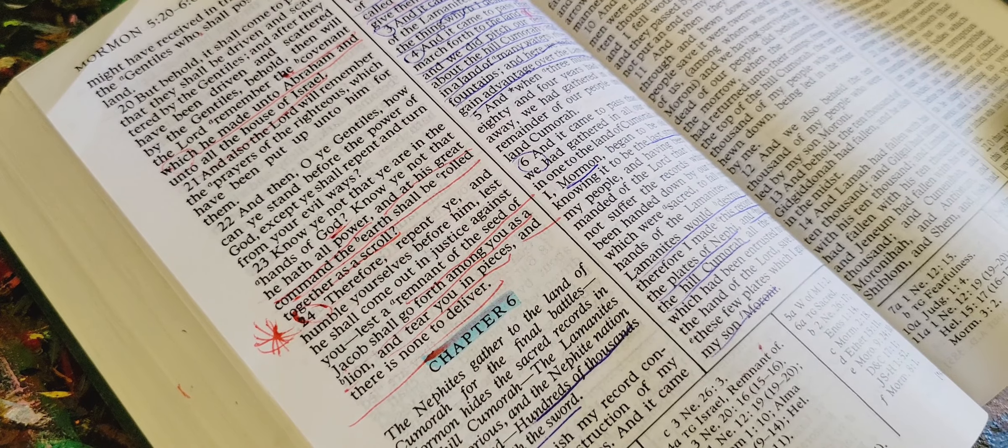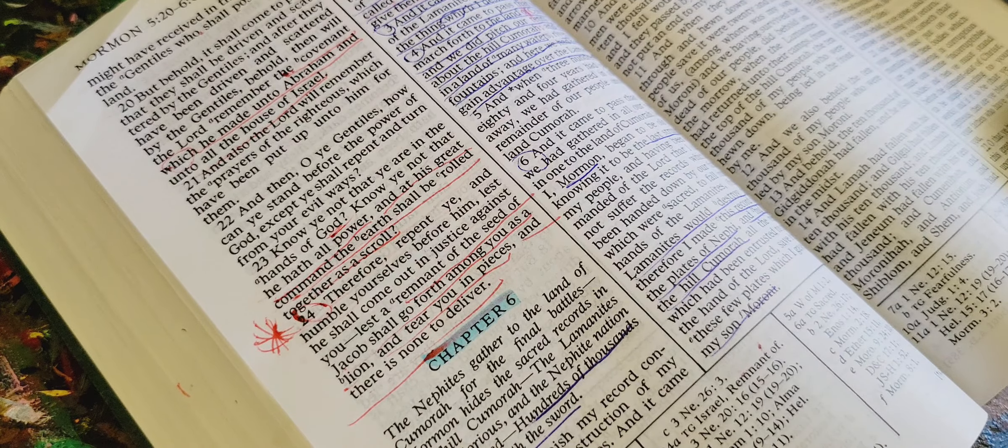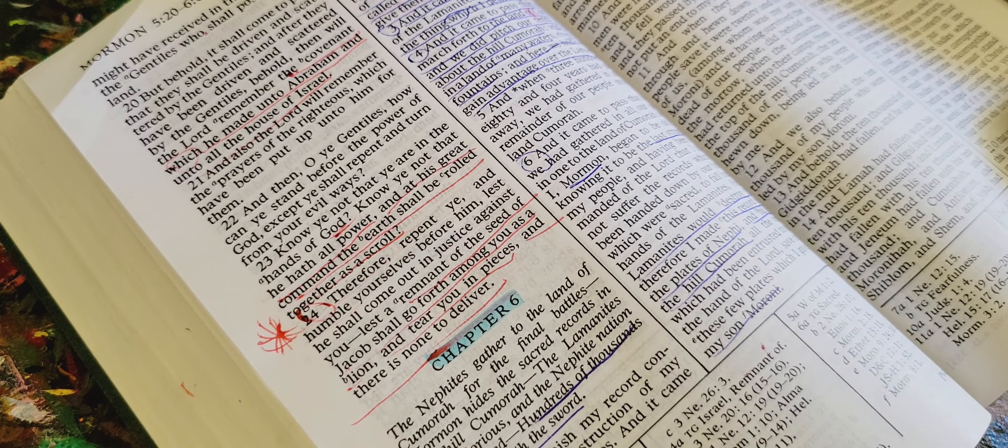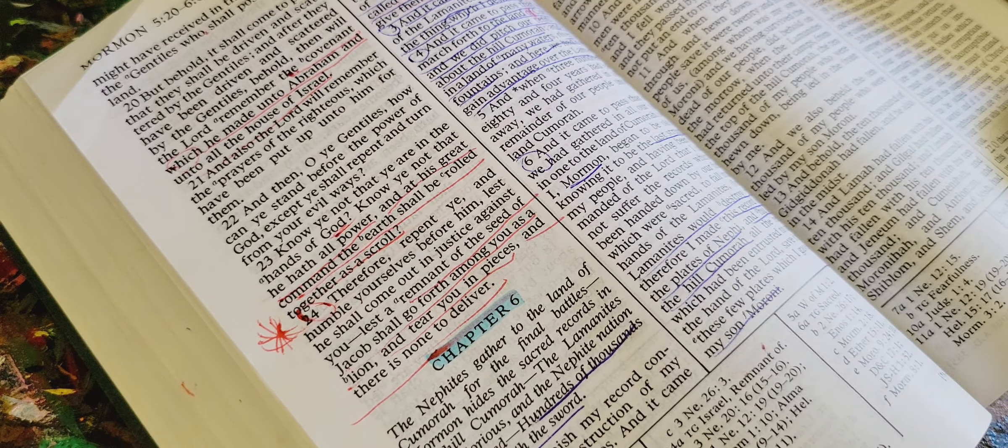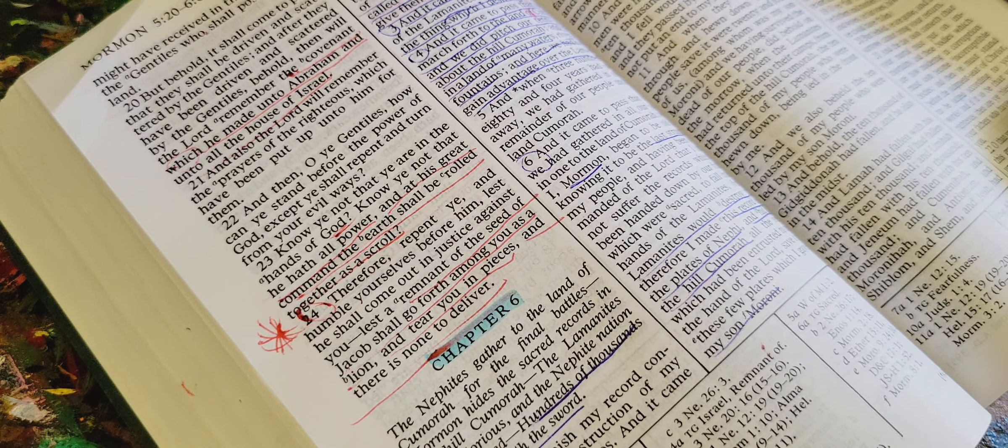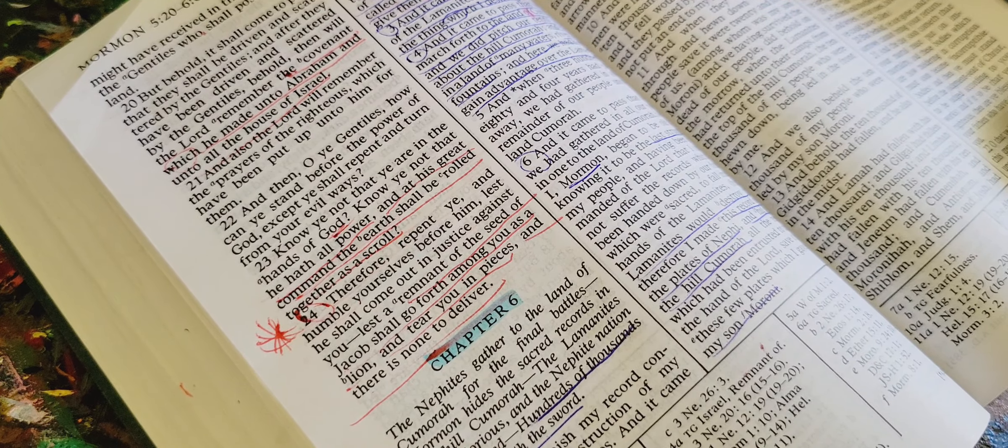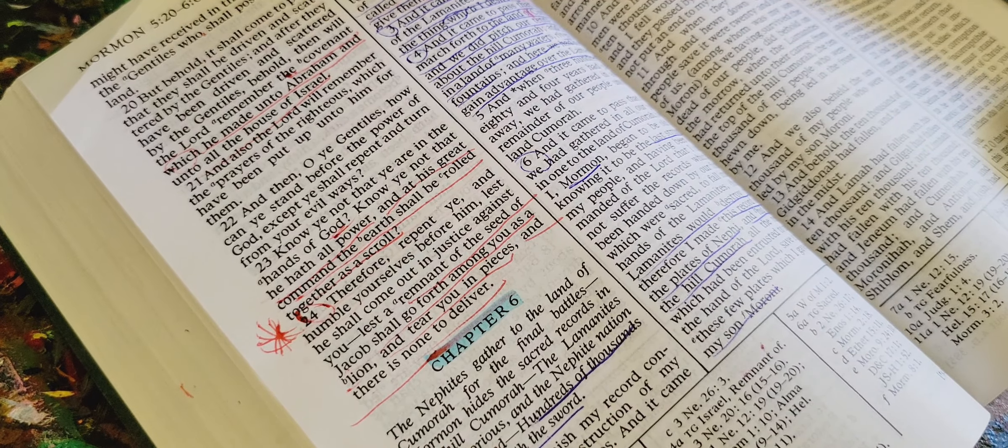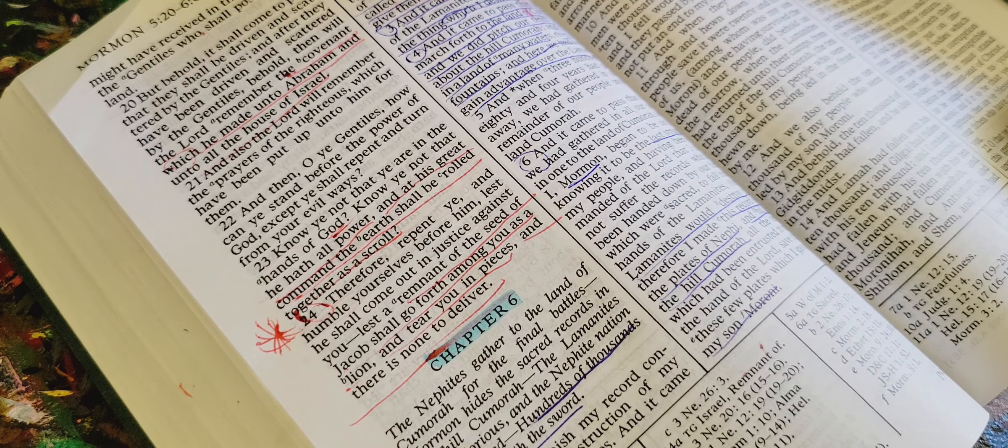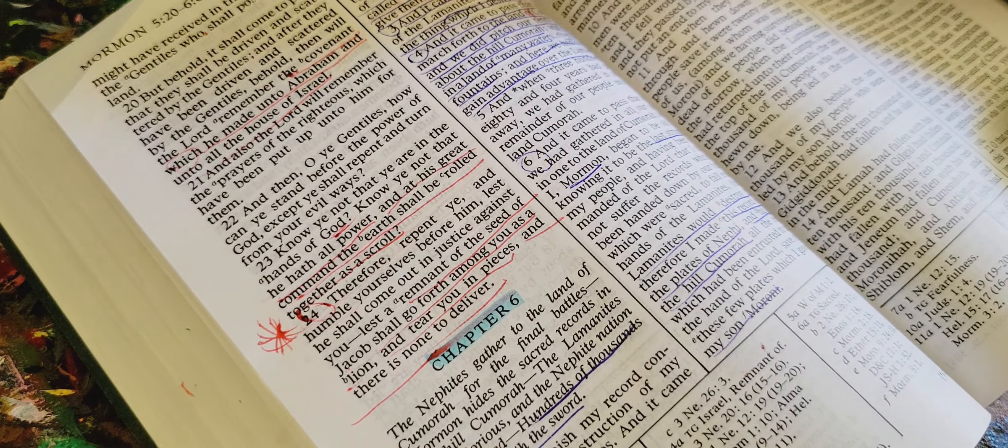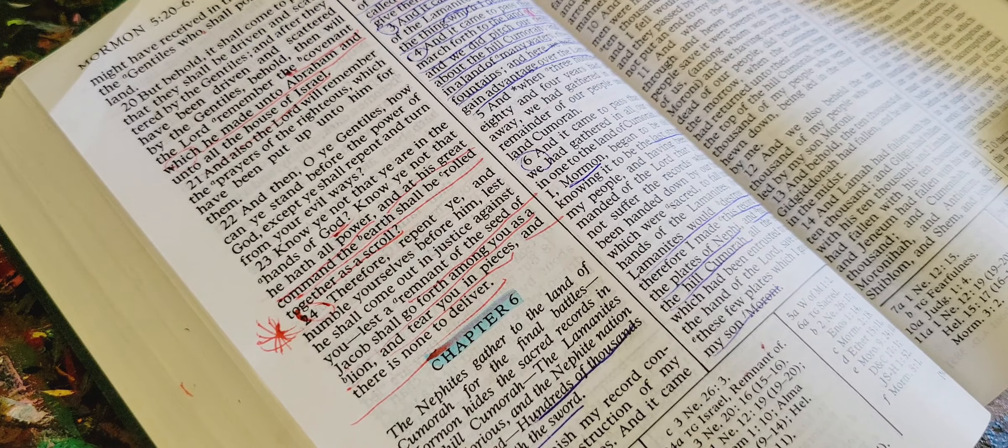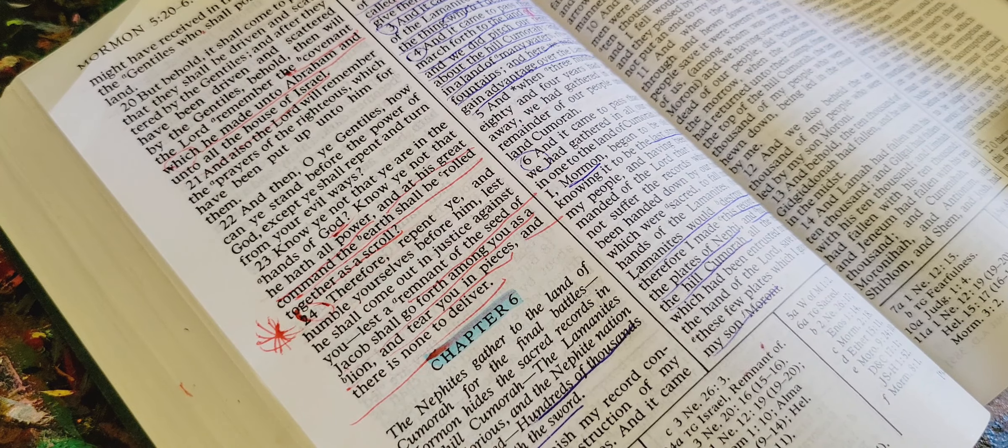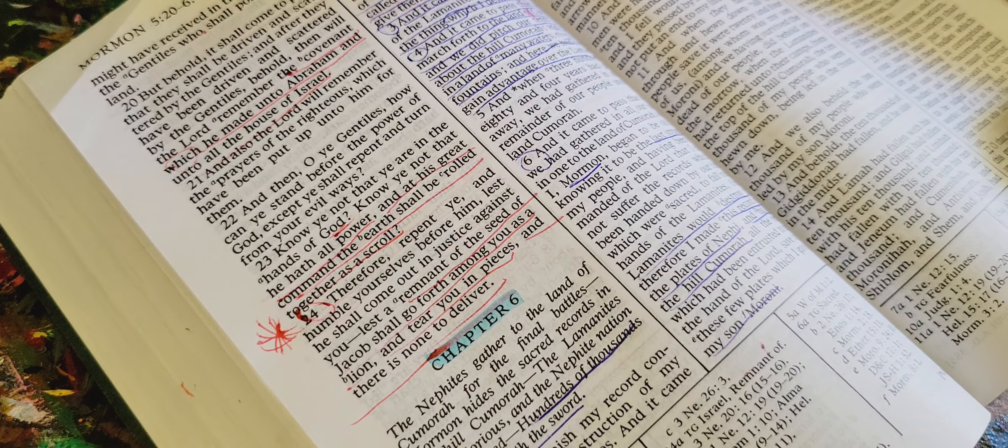And it came to pass that my people with their wives and their children did now behold the armies of the Lamanites marching towards them, and with that awful fear of death, which fills the breasts of all the wicked, did they await to receive them. And it came to pass that they came to battle against us, and every soul was filled with terror because of the greatness of their numbers. And it came to pass that they did fall upon my people with the sword, and with the bow, and with the arrow, and with the axe, and with all manner of weapons of war.